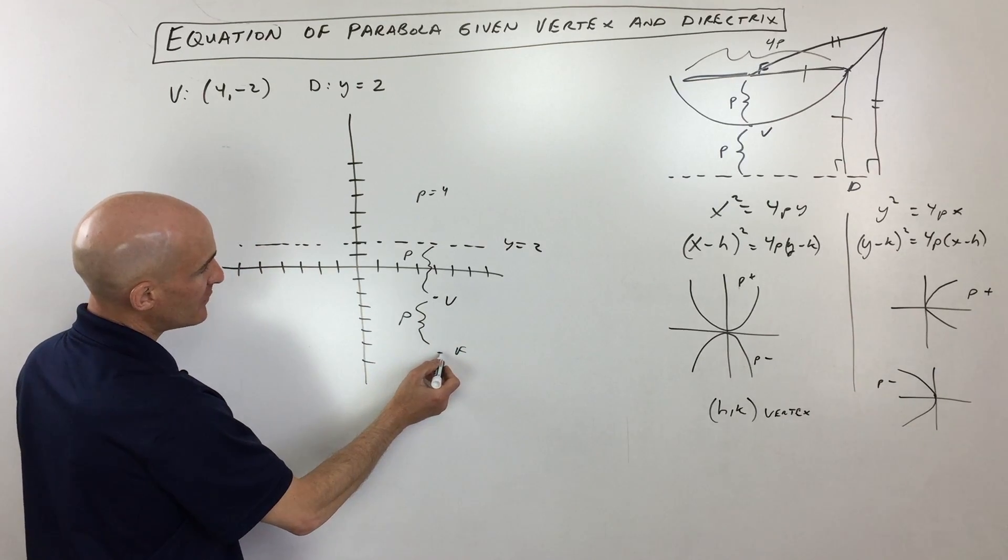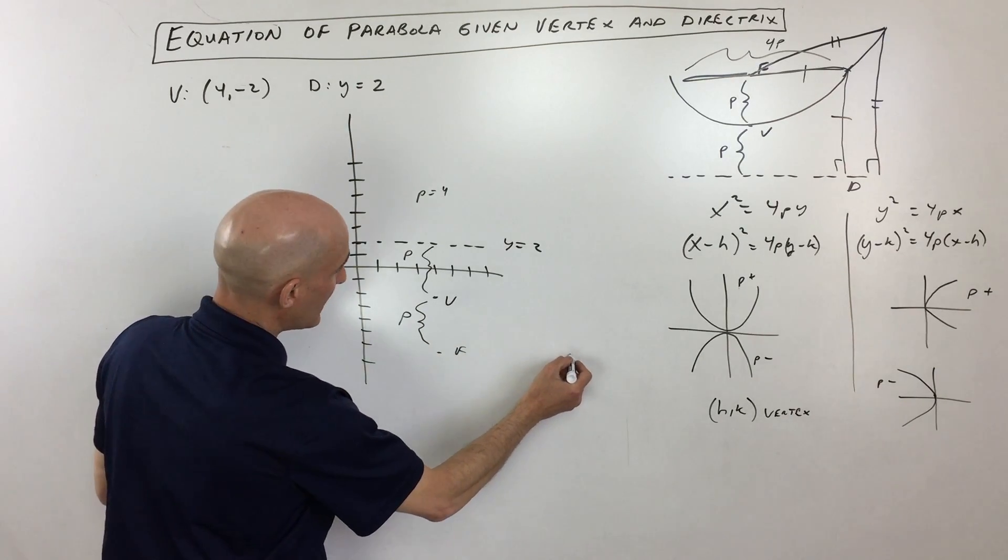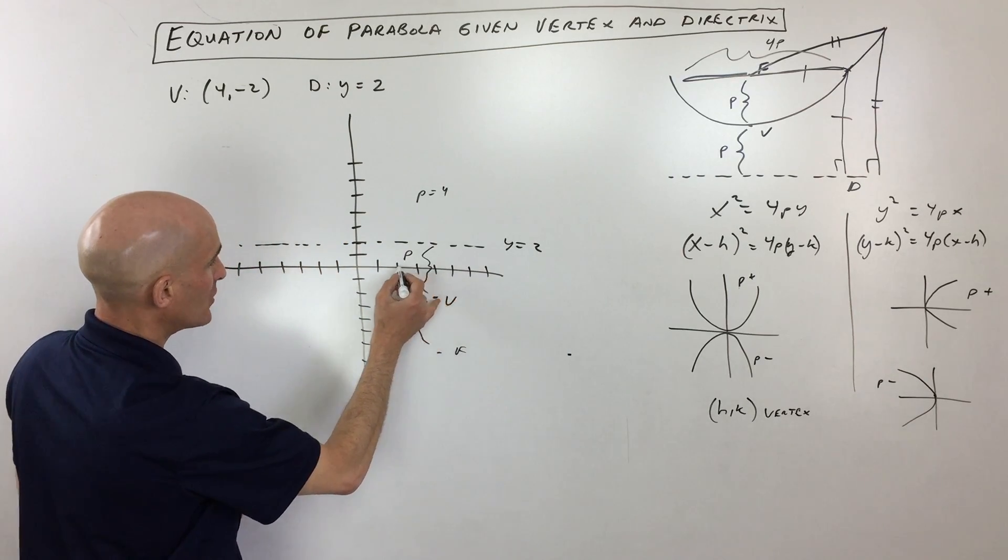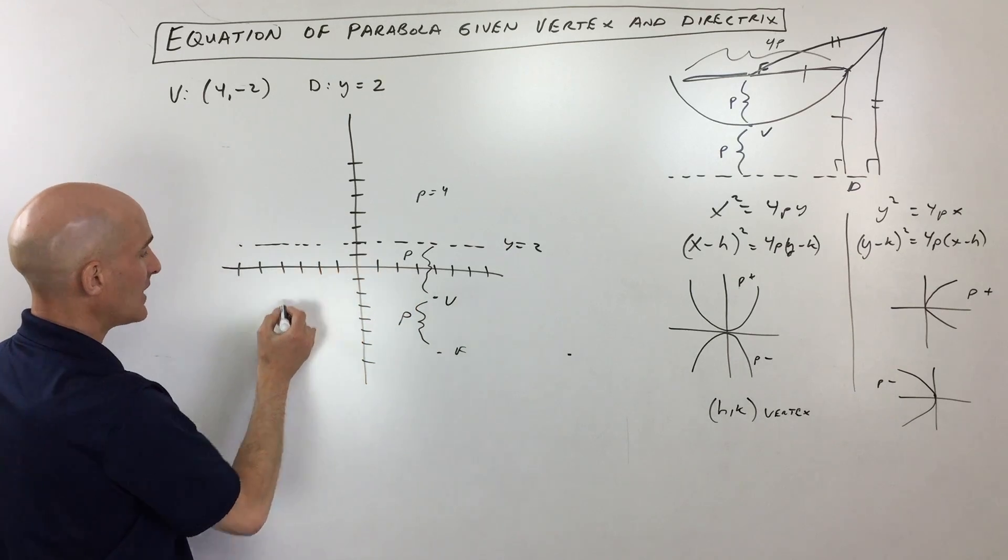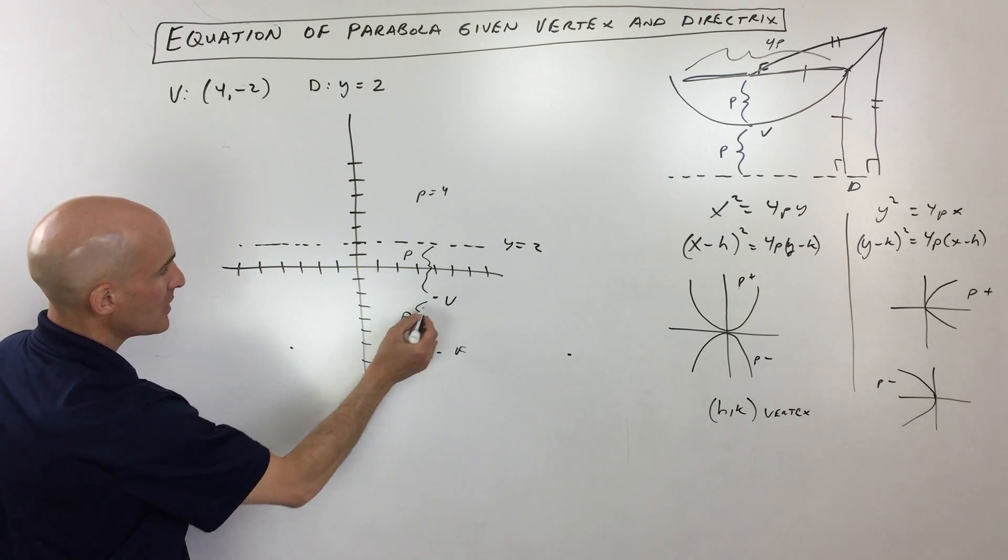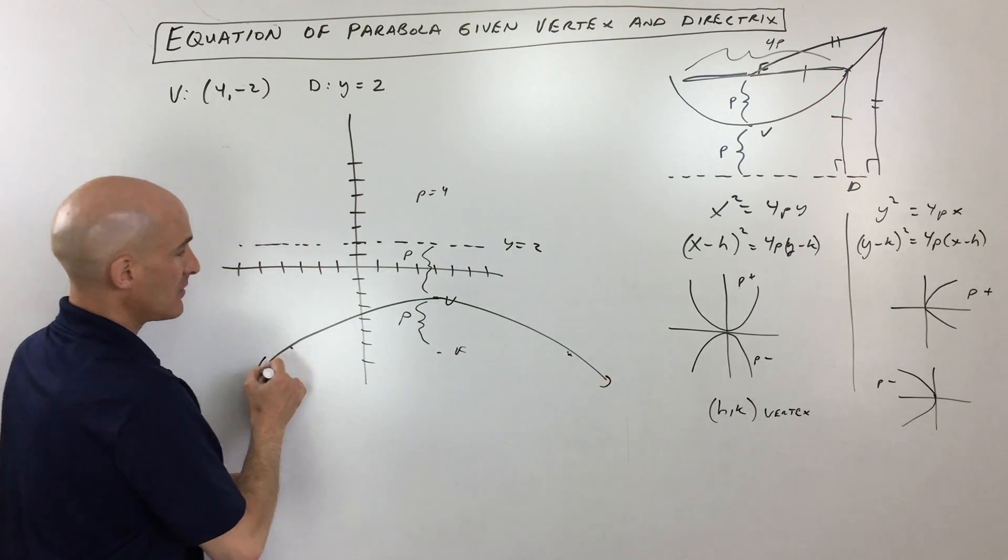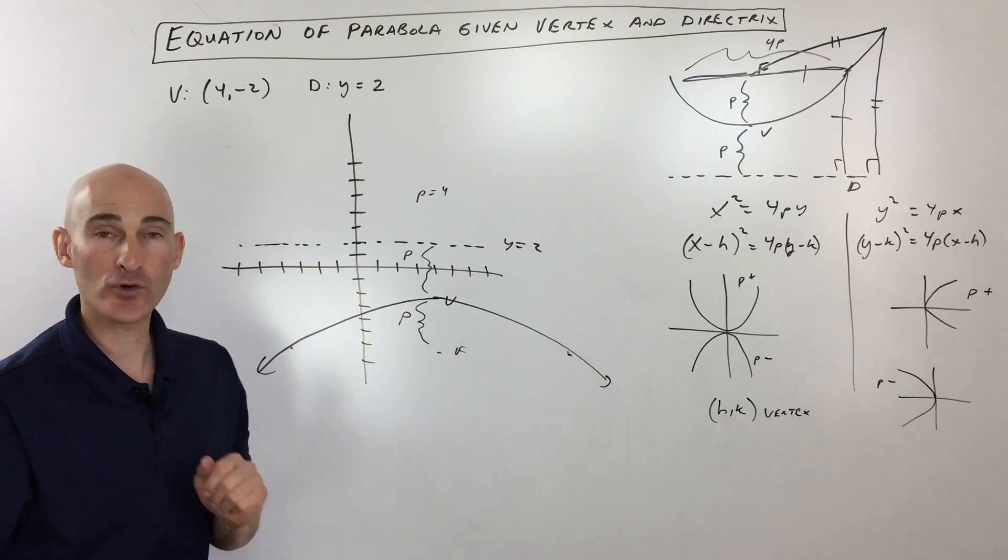What I would do is from the focus here, I would go right 8 and I would go left 8. So let's see how much is that right here. So it's going to be 1, 2, 3, 4, 5, 6, 7, 8, right about over here. So that gives you an idea about how wide the parabola is at the level of the focus.